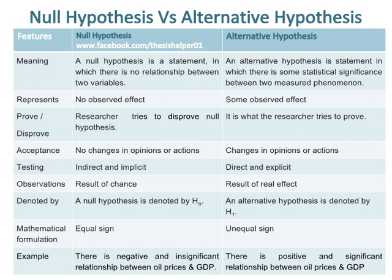An example of a null hypothesis is: there is a negative and insignificant relationship between oil prices and GDP. An example of an alternative hypothesis is: there is a positive and significant relationship between oil prices and GDP.